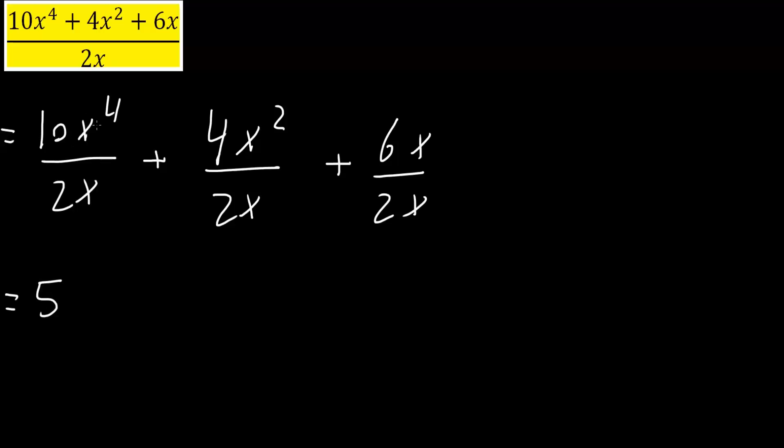So what I'm going to do here is 10 divided by 2 is 5, but I still have this x in the bottom. So x raised to the fourth divided by x would give us x raised to the 3. Essentially what we're doing here is saying x raised to the 4 minus this 1 right here. And that's why we got x raised to the 3.